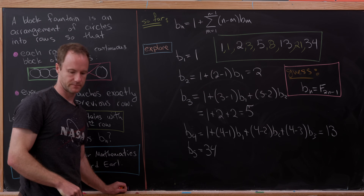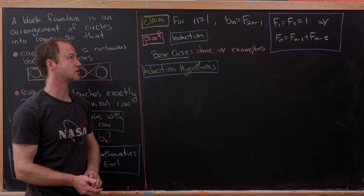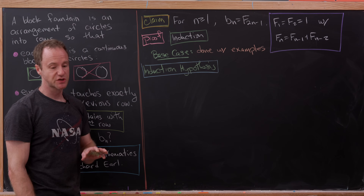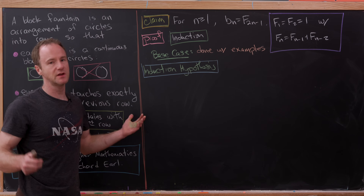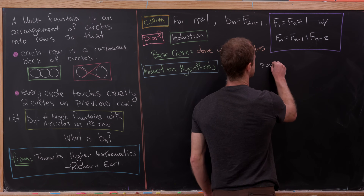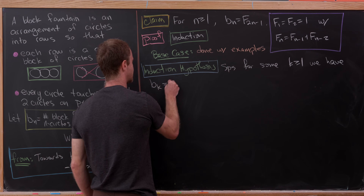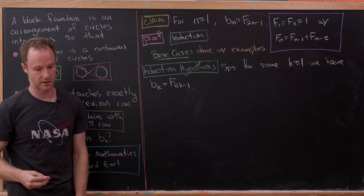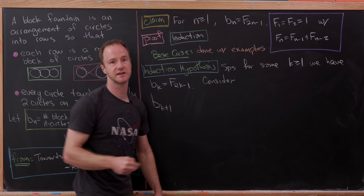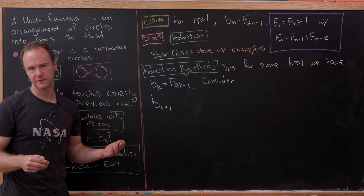Let's prove that b_n = F_{2n-1}, recalling the Fibonacci recurrence. We'll prove this by induction; the base cases are already verified by our examples. For the induction hypothesis, suppose for some k ≥ 1 that b_k = F_{2k-1}. We now consider b_{k+1}.